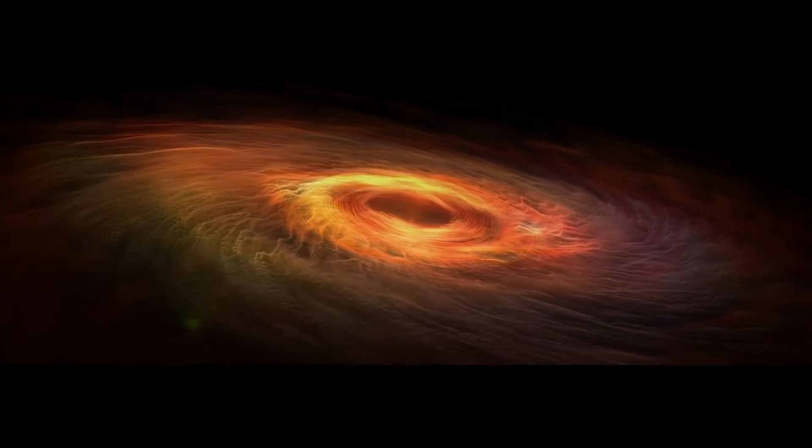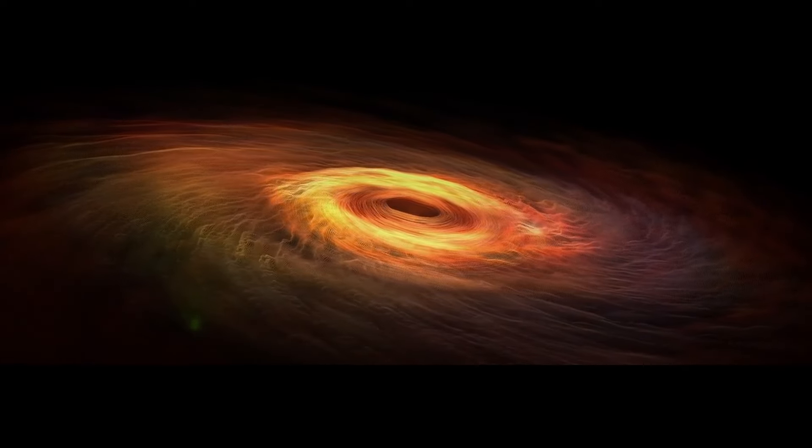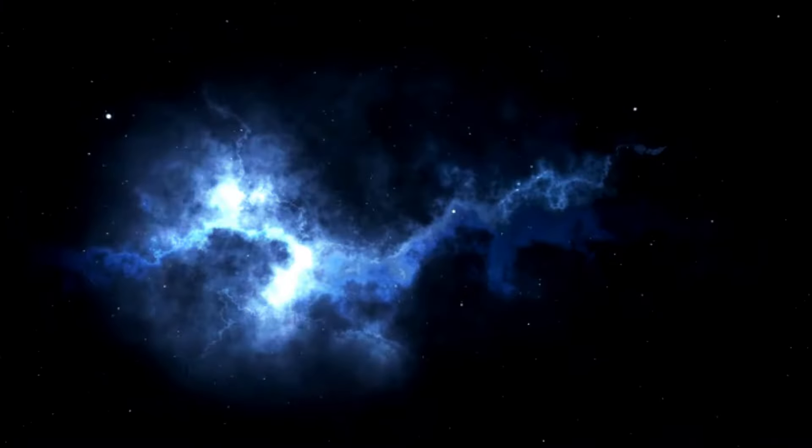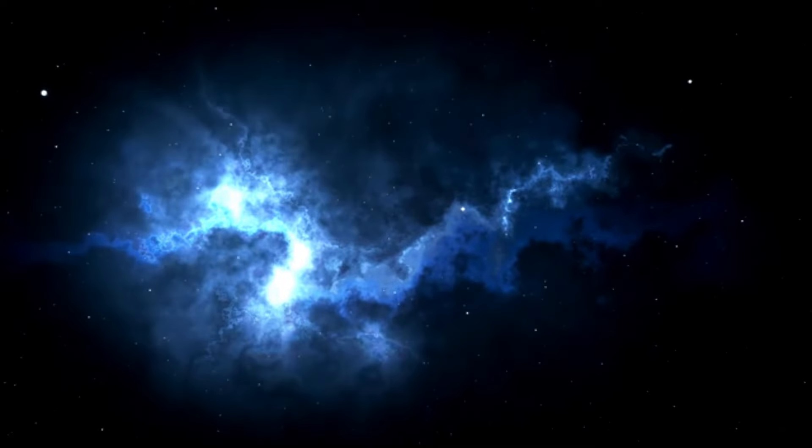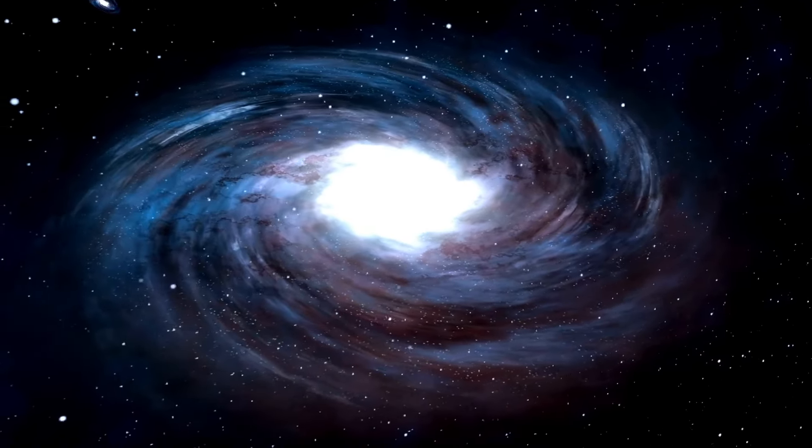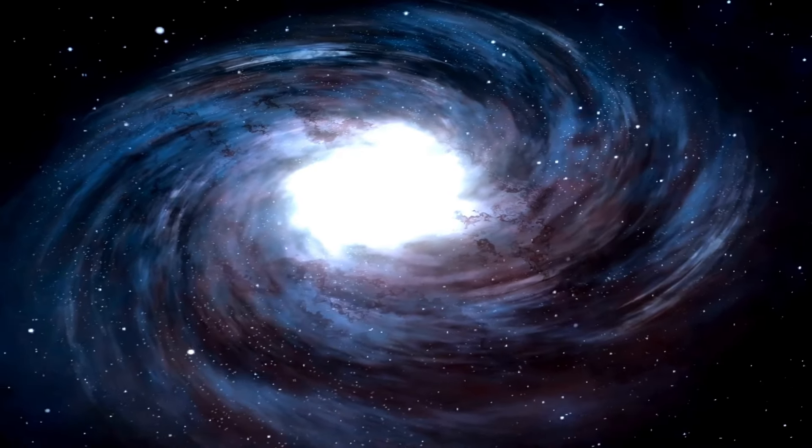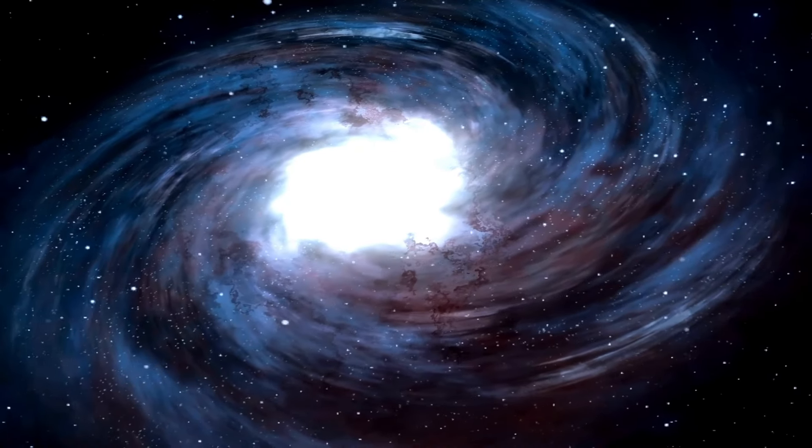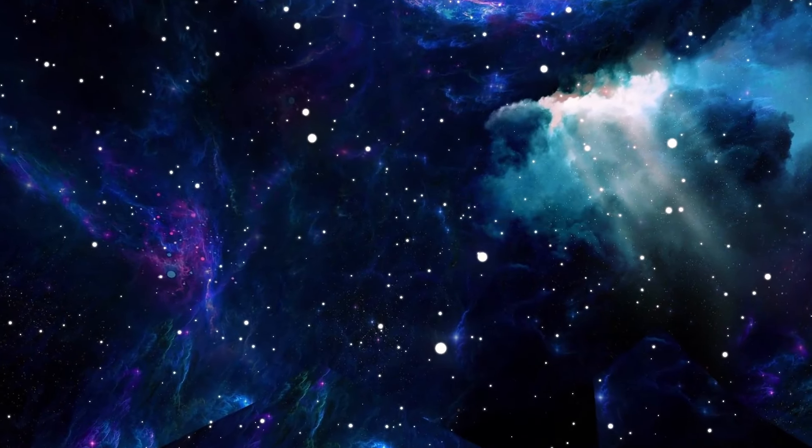Imagine Betelgeuse as a giant celestial volcano, suddenly erupting and spewing a colossal amount of its matter into space. In past observations from the Hubble Space Telescope, it was unveiled that Betelgeuse has previously ejected an enormous amount of its surface material into the cosmos. This ejection, a colossal event, was 400 billion times the mass typically released during similar solar phenomena, equivalent to several times the mass of our Moon.